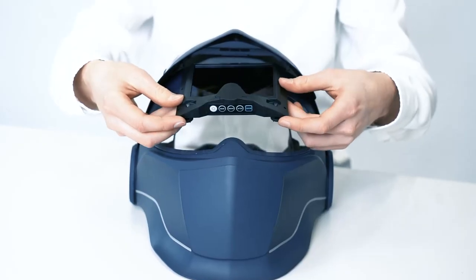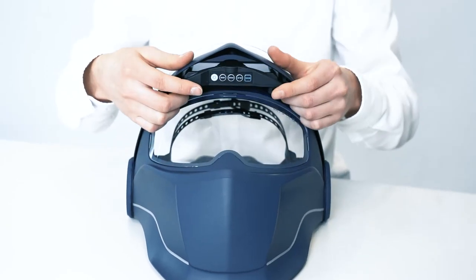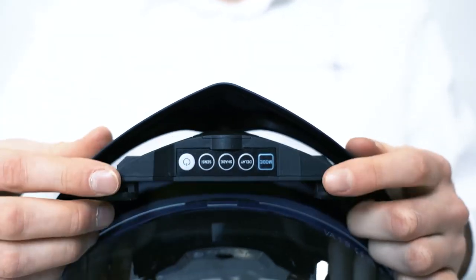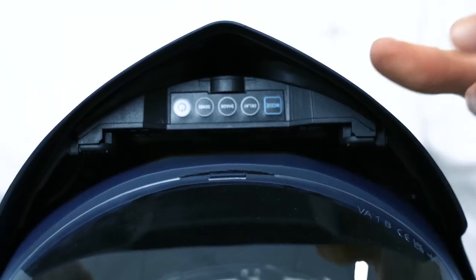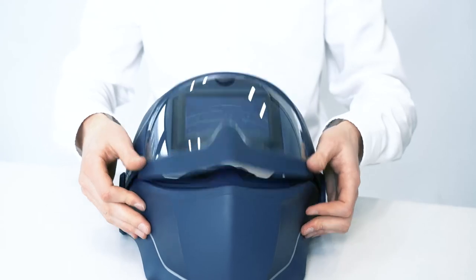Now, push the entire ADF back into the flip element of the helmet. Make sure that the top of the ADF slides into the recess provided until the latches on the bottom can be pushed outwards again and the ADF is thus secured.